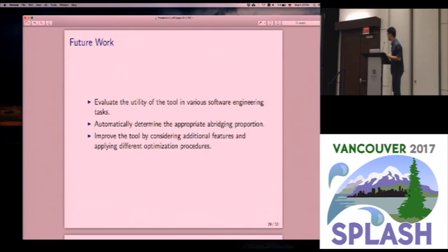And additionally, there's some features we would like to add to our tool. For example, currently, we have to let the user or the program that uses our tool to hard-code the proportion for the source code abridgment. Probably in the near future, we want our tool to automatically determine that. And finally, we can definitely try additional features, and probably try different formalization of the problem to see if the tool will be better.